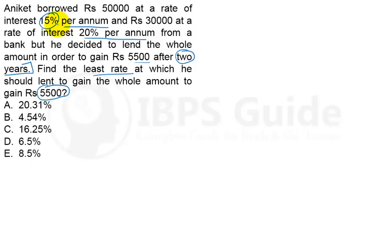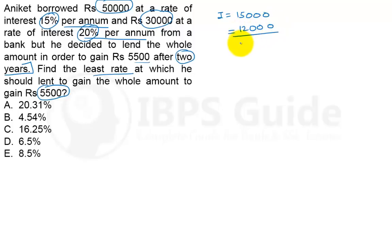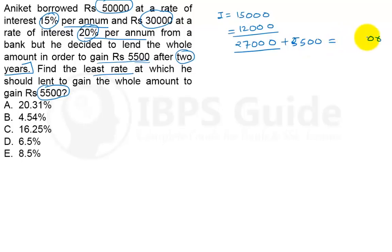For the 15% per annum loan over two years, the effective rate is 15 × 2 = 30%. So 30% of 50,000 = rupees 15,000 interest. For the 20% per annum loan over two years, the effective rate is 40%. So 40% of 30,000 = rupees 12,000 interest. Total interest he must pay = 15,000 + 12,000 = 27,000. He wants to gain 5,500, so total interest he needs to collect = 27,000 + 5,500 = 32,500.